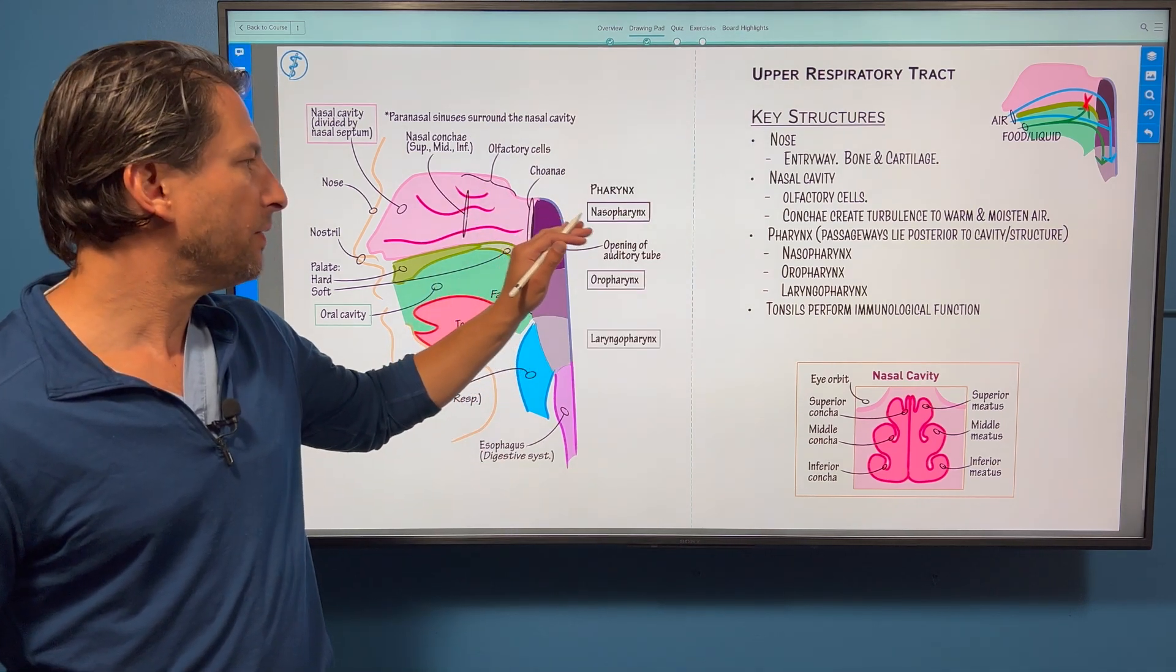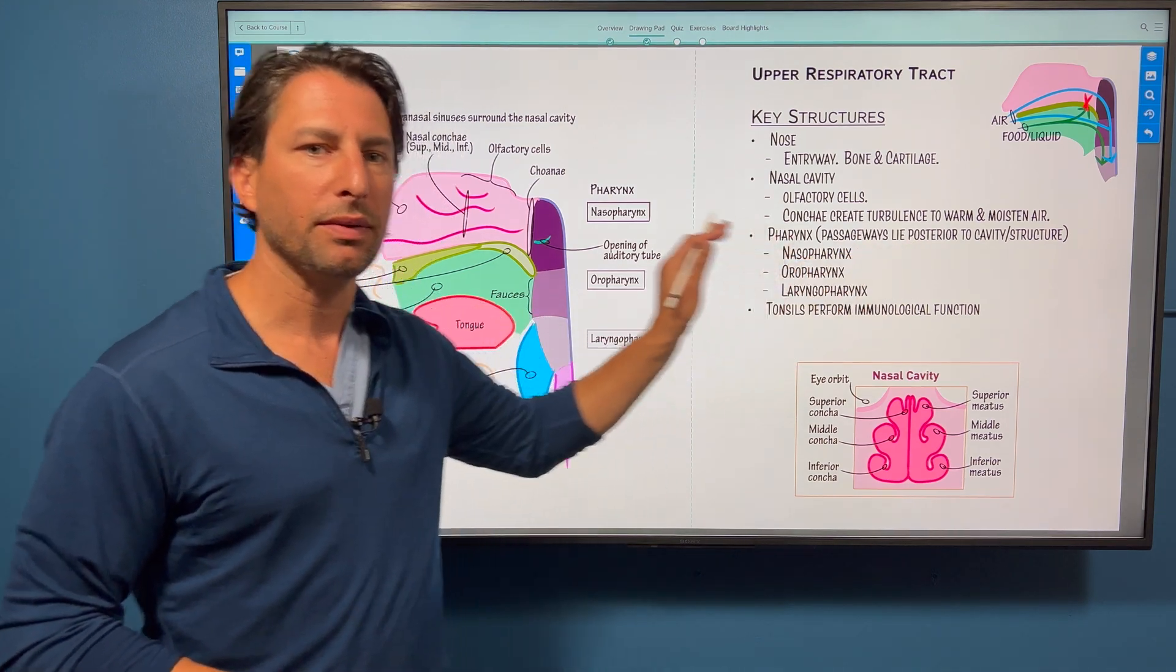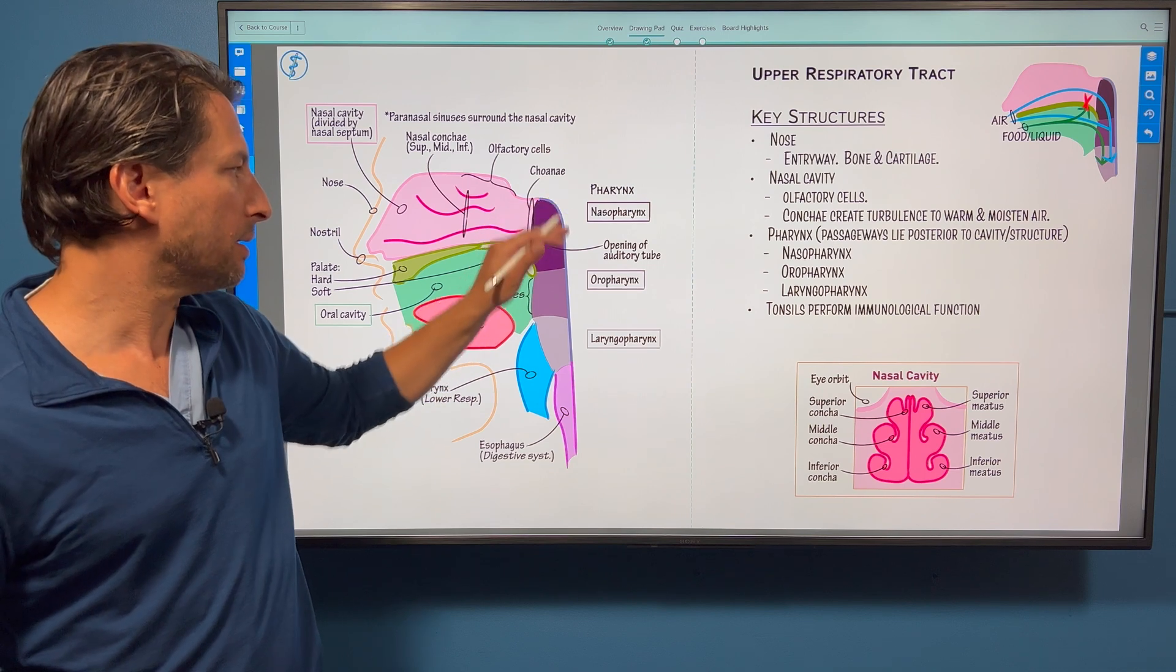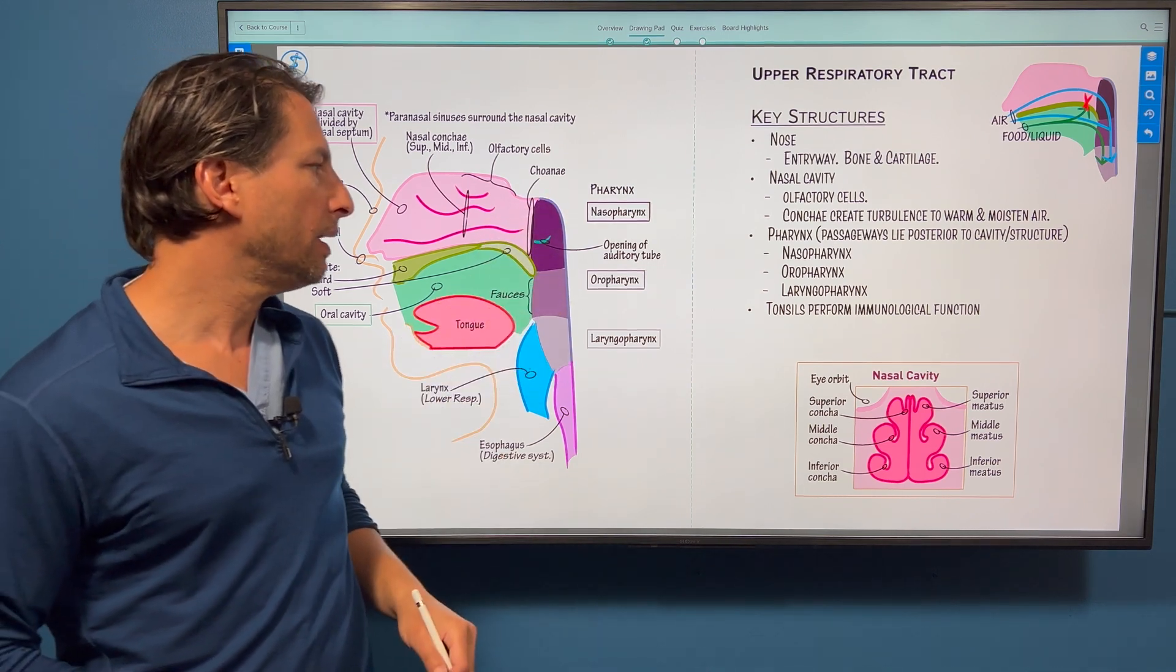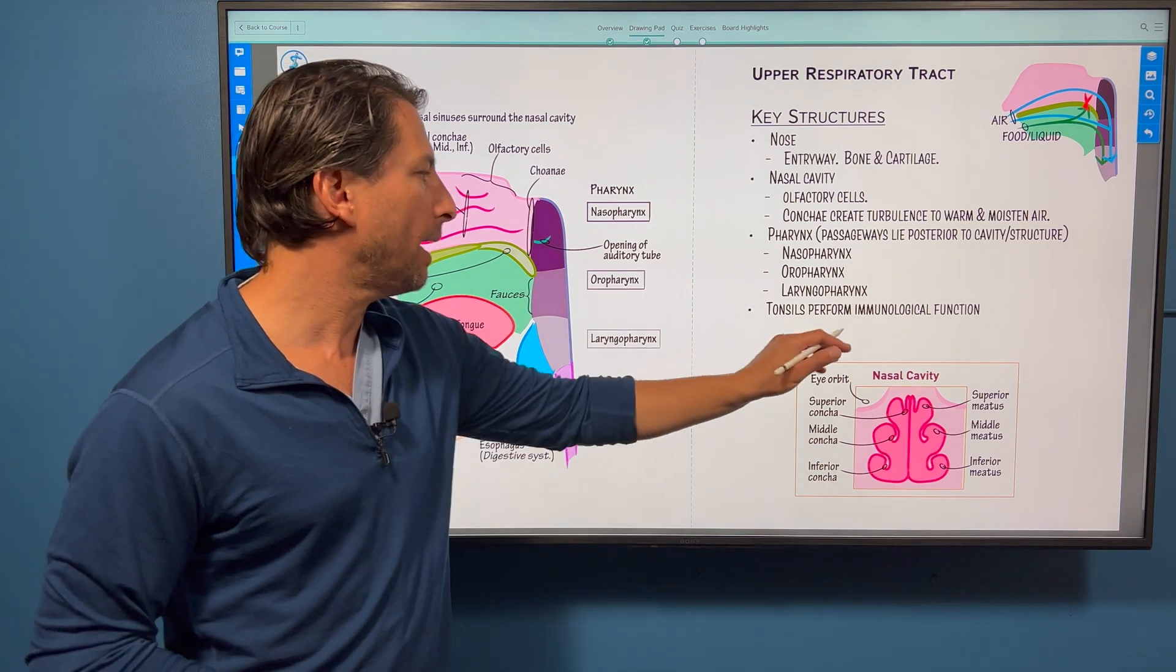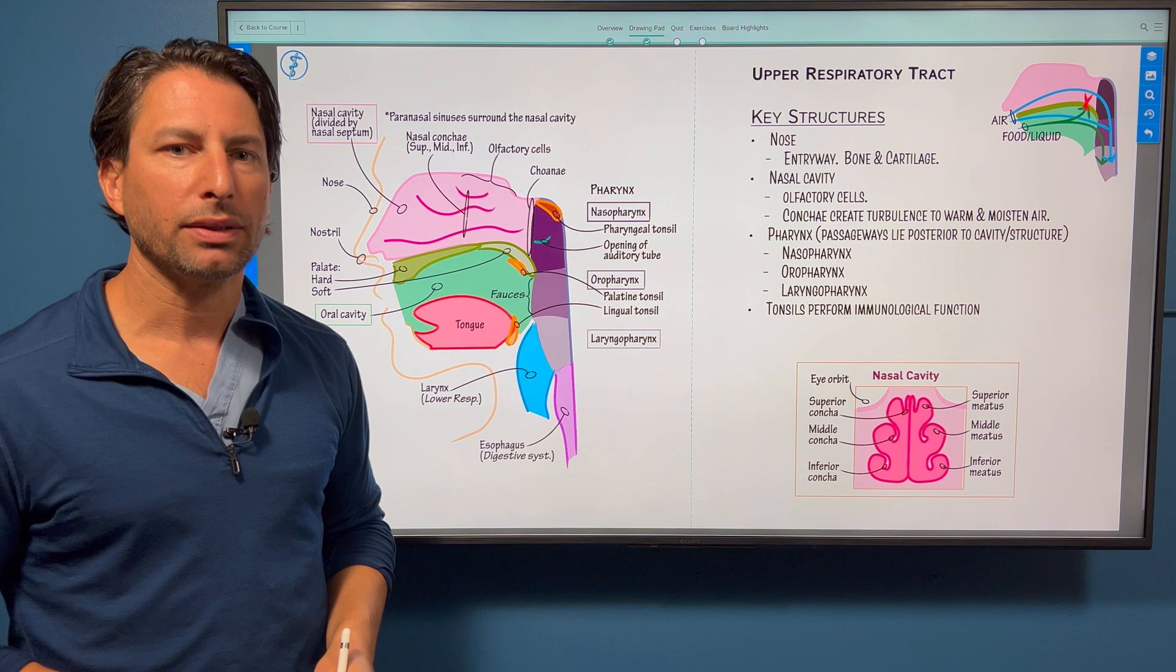The pharynx itself is defined as passageways that lie posterior to cavity or structure. That's how they're named. This is the nasopharynx, oropharynx, and laryngopharynx. And then we add in the tonsils. Think about them for immunological function.